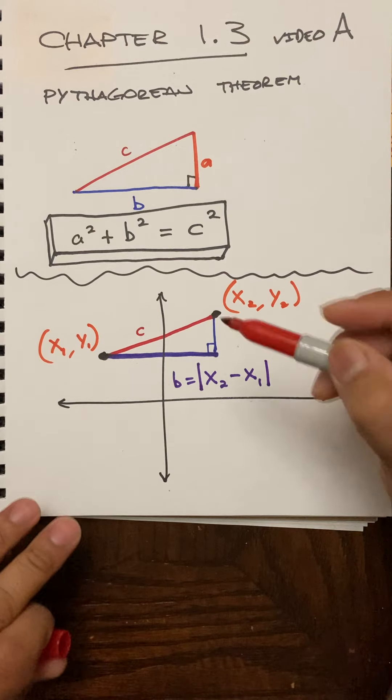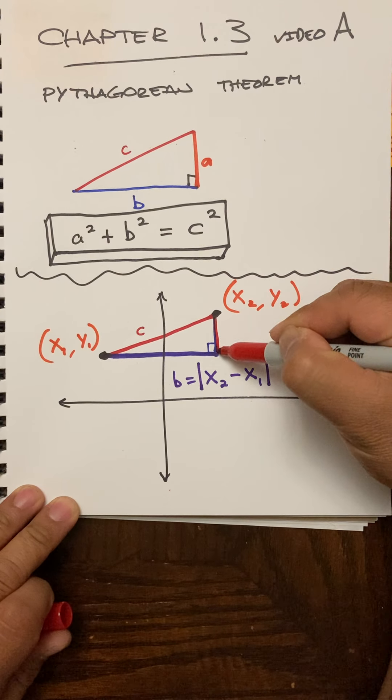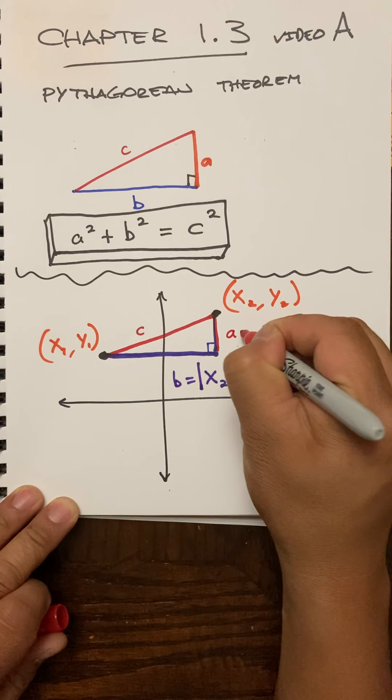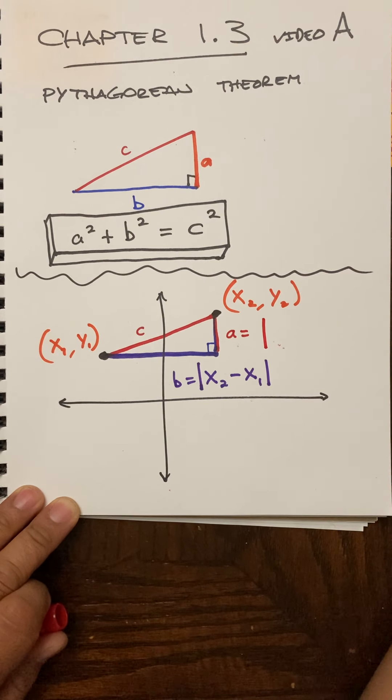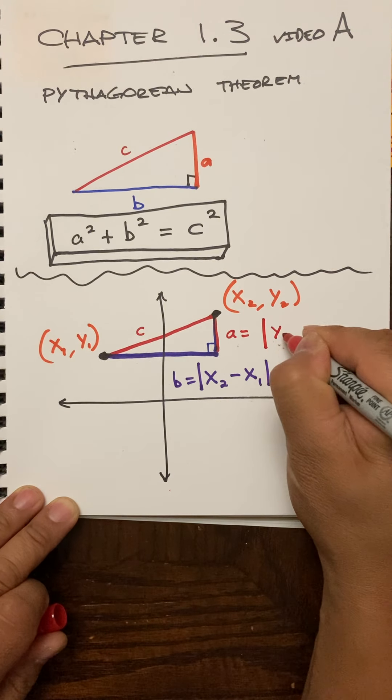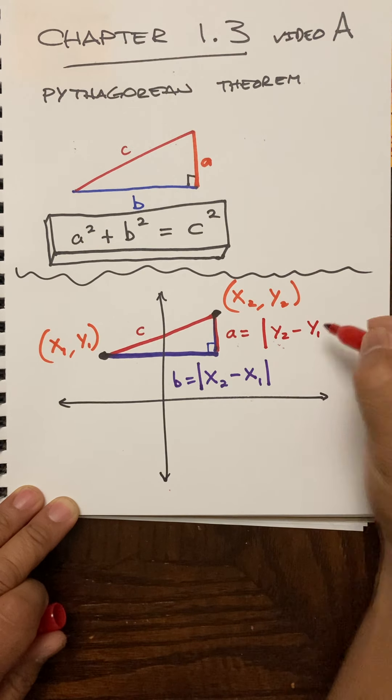And then for this length over here, which earlier we called a, a is equal to, again I'll do these absolute value bars, y2 minus y1.